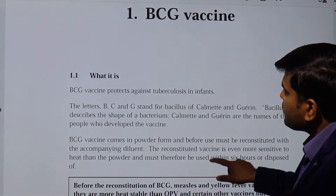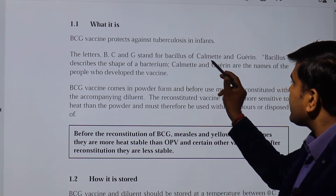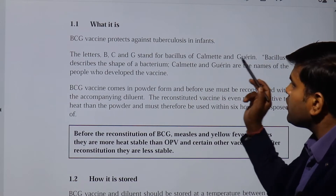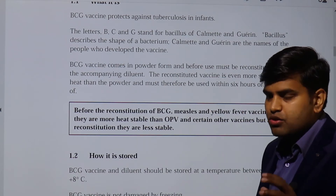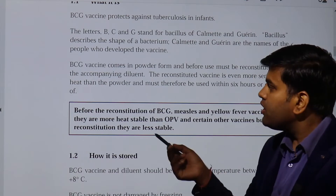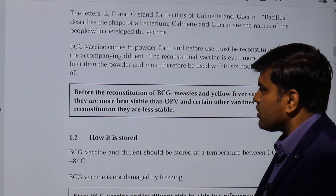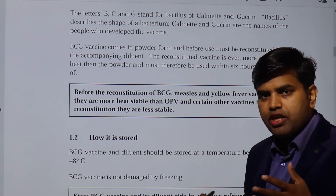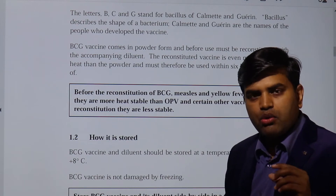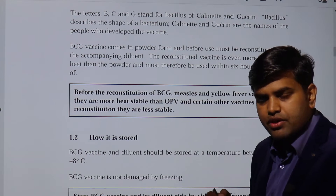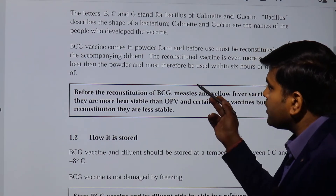The BCG vaccine comes in powder form and must be reconstituted with the accompanying diluent before use. The reconstituted vaccine is even more heat-sensitive than the powder and must be used within six hours or disposed of. Once you add the diluent to the powder, you must administer it within six hours — failure to do so may result in vaccine failure, as the weakened bacteria will be damaged and no immunity will develop.